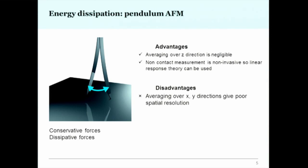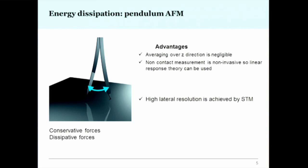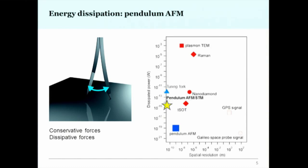The disadvantage of pendulum AFM is that because it oscillates laterally, we lose spatial resolution. However, we can replace the probe with a metal-coated one, get a stiffer cantilever, and operate in STM mode. Using tunneling current as the feedback signal, we don't need to oscillate by nanometers, so we gain very high spatial resolution and better dissipation resolution — comparable to a tuning fork but with some advantages.